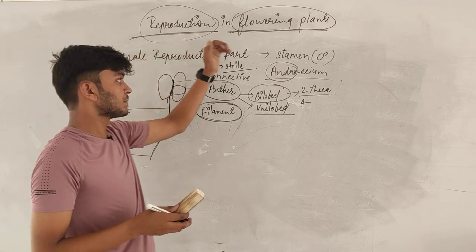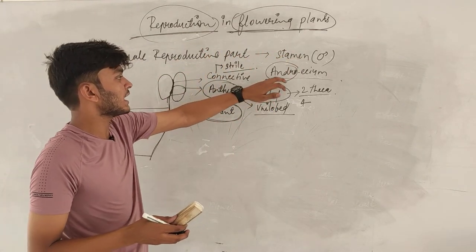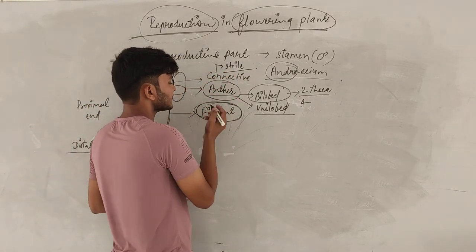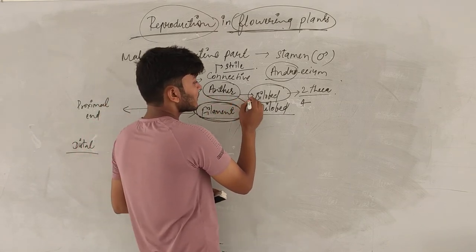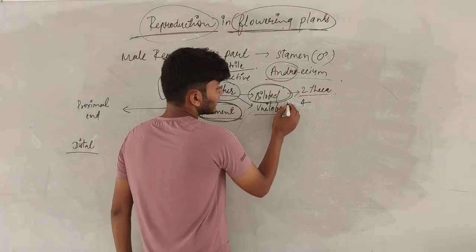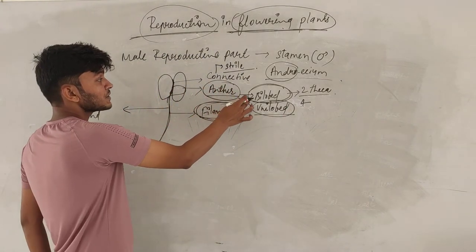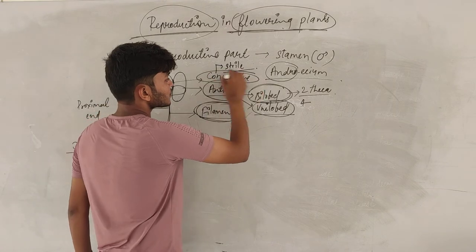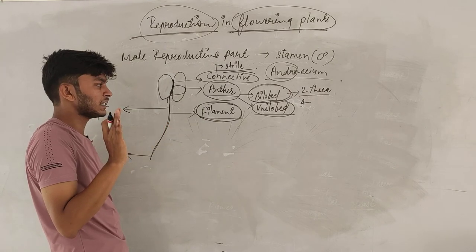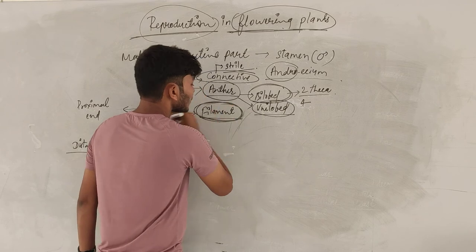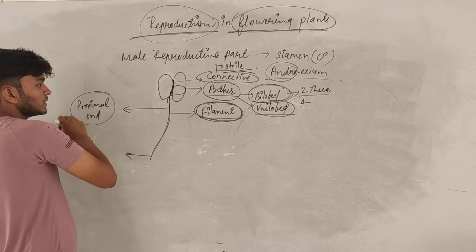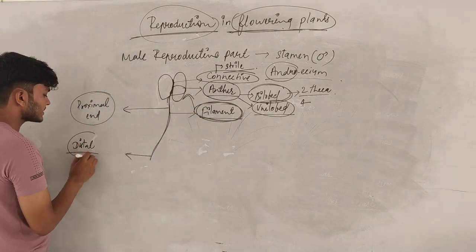So let's recap the male reproductive part — the stamen. As per NCERT, the stamen has two parts: number one is the anther, and number two is the filament. The anther is generally a bilobed structure, and each lobe contains two thecae. It can also be unilobed. The region connecting the two lobes is called the connective, which is a sterile part. The lower filamentous structure is called the filament. The end near to the anther is proximal, and the end near to the thalamus is distal.